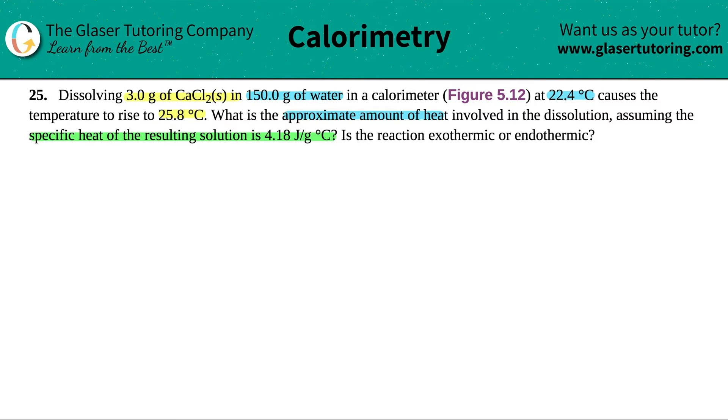They also say that it's a solution because they said the specific heat of the solution was 4.18. With these types of questions, we're going to be using the formula Q equals msΔT. We're going back to the original. They want us to approximate the amount of heat, and the heat is Q. So that means I should know the other three components.